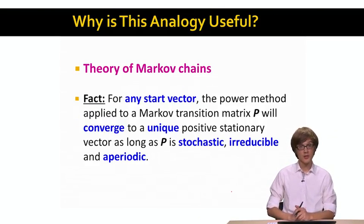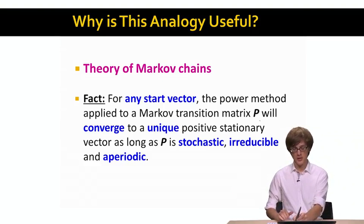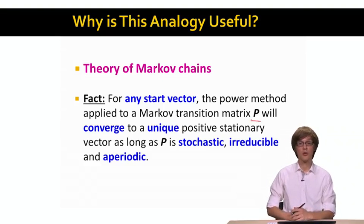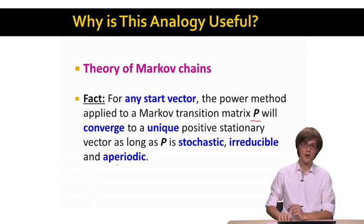So, theory of Markov chains says the following. It says that for any start vector, the power iteration applied to this Markov transition matrix P will converge to a unique, positive stationary vector, as long as this matrix P has three properties. It has to be stochastic, it has to be irreducible, and aperiodic.